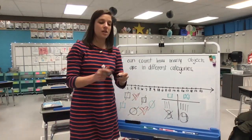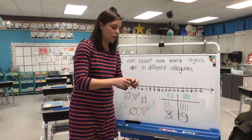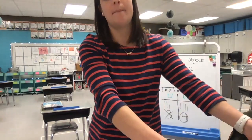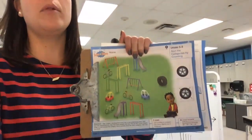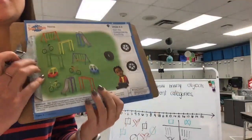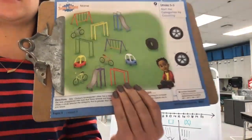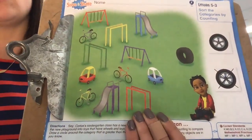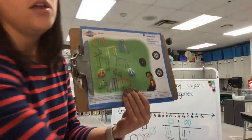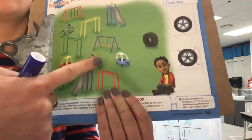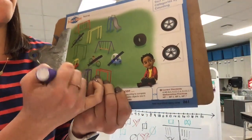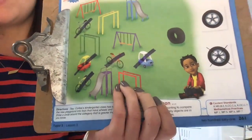So today we're going to do a very similar activity on our math activity sheet. Let's take a look at our solving share. It tells us that Carlos's kindergarten class got some new playground equipment. On the playground, there are several things that have wheels and several things that do not. So what we need to do is put into categories the equipment that has wheels versus the things that do not have wheels. You can see there are some bikes, some toy cars, some play cars. Let's count the pictures that have wheels. Ready? One, two, three, four, five. There are five pieces of equipment on the playground that have wheels.